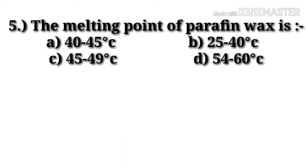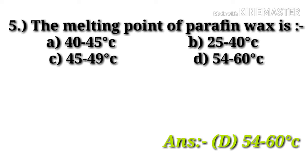Question number 5: the melting point of paraffin wax is — option A: 40 to 45 degrees Celsius, option B: 25 to 40 degrees Celsius, option C: 45 to 49 degrees Celsius, option D: 54 to 60 degrees Celsius. The melting point of paraffin wax is 54 to 60 degrees Celsius, option D.